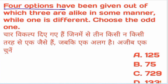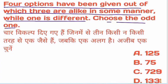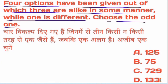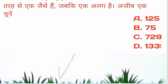Four options have been given, out of which three are alike in some manner while one is different. We are going to read it the same way.